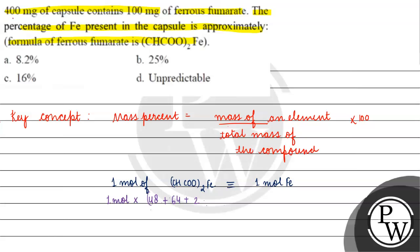Plus ek hydrogen atom hai aur into 2 kardengi usko, 2 hojayega, plus hamare paas hojayega iron ka atomic mass which is 56. Agar isko hum calculate karna chahe, to kitna hojayega? One mole into 114 plus 56, total kitna ayega? 170 gram per mole, right?